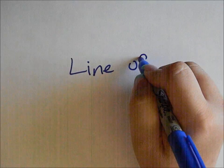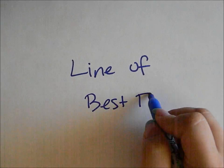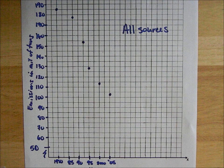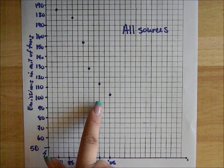The first thing we need to know about finding the line of best fit is to create a scatter plot. A scatter plot is a graphical representation of data. When you graph the points on a coordinate plane, notice how the points do not line up — hence the name scatter plot.